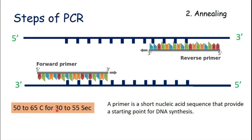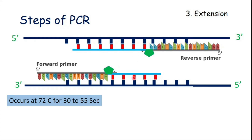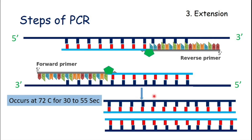The time used for annealing is 30 to 55 seconds. The next step is extension. In this step, DNA polymerase — which is Taq polymerase in the case of PCR — adds nucleotides to grow a new strand of DNA. This step takes place at 72 degrees Celsius for 30 to 55 seconds. At the end of this step we have completed our first cycle and we will get two copies of DNA.